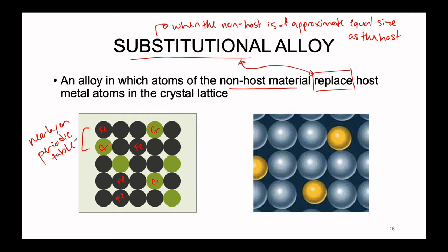There are some more nuanced rules to it that we discuss in more advanced classes — it all comes down to the d orbitals. The takeaway that is true 90% of the time is that if our host and non-host are nearby on the periodic table, chances are they will be of approximately equal size and therefore will form a substitutional alloy.